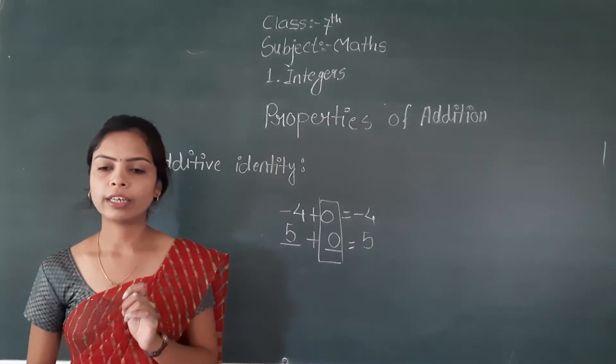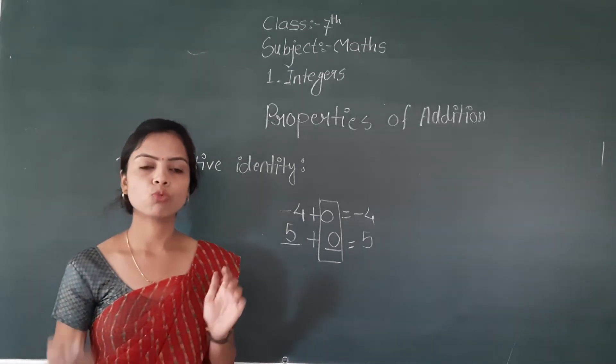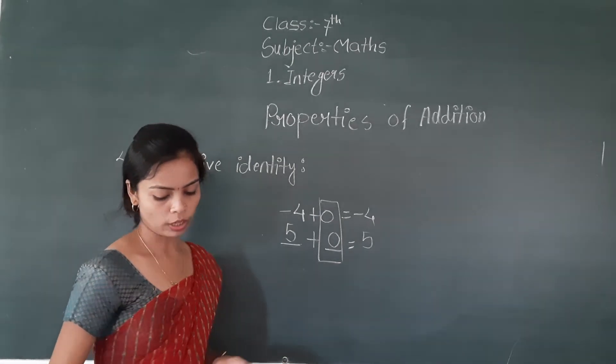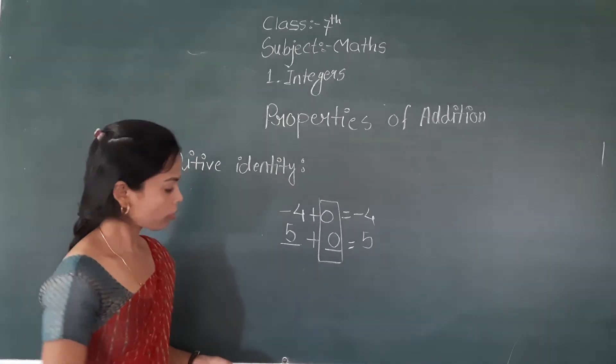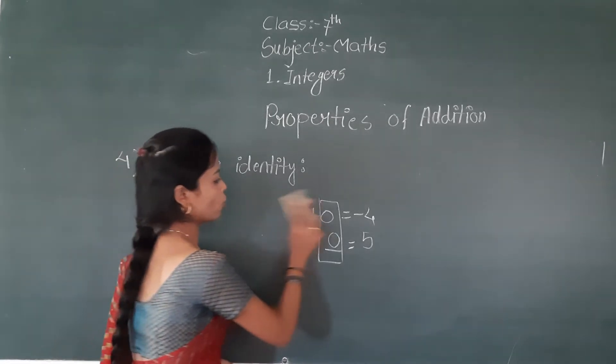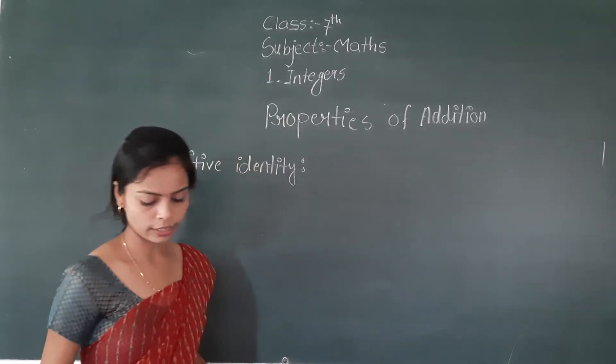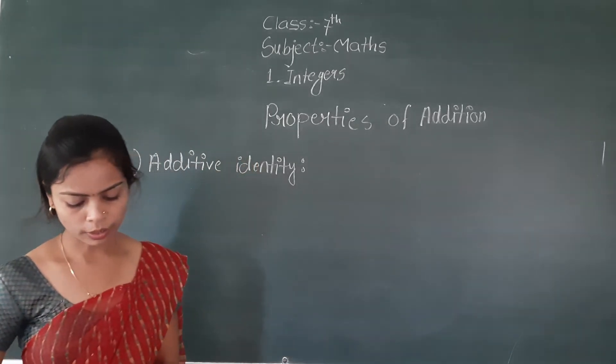Additive identity means that when we add that number to any integer, the value doesn't change. So zero is your additive identity.